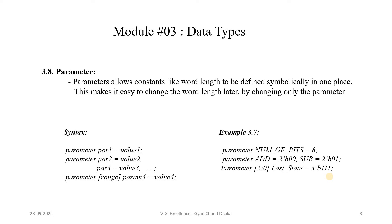Parameters allow constants like word length to be defined symbolically in one place. For example, in our Verilog HDL code, if we have to use the same constant value multiple times, that constant value we can define using a parameter and then we can use that parameter at all the places.